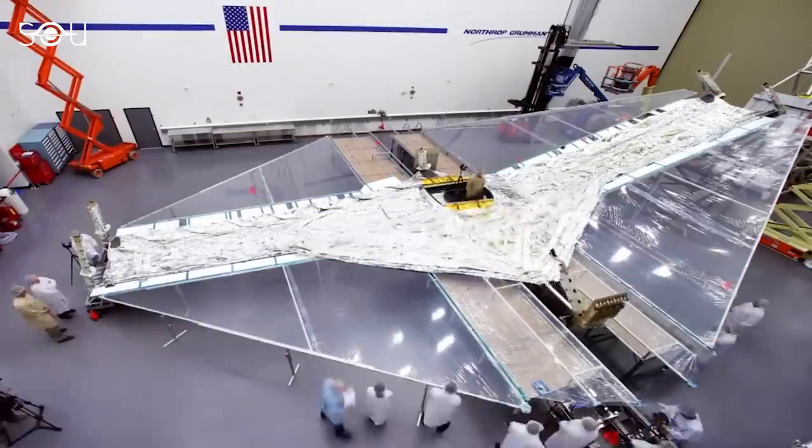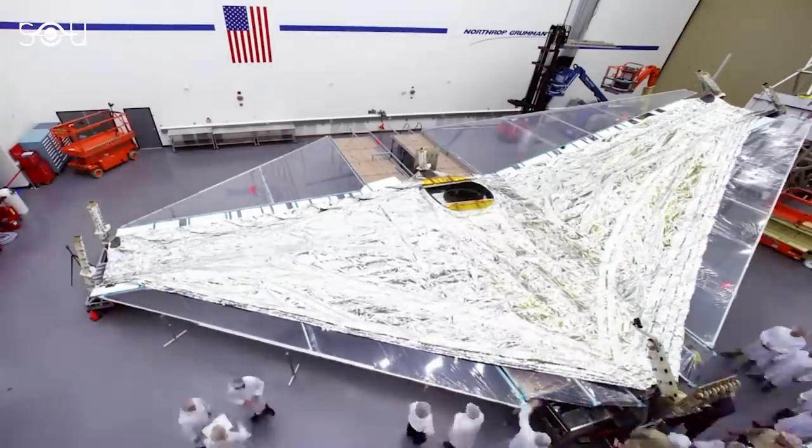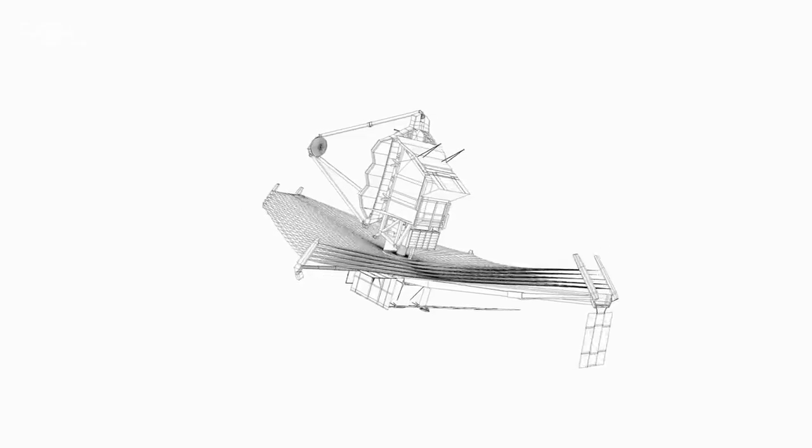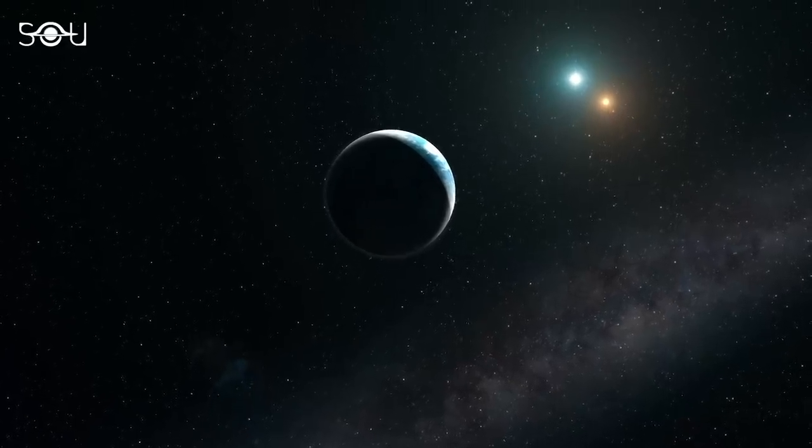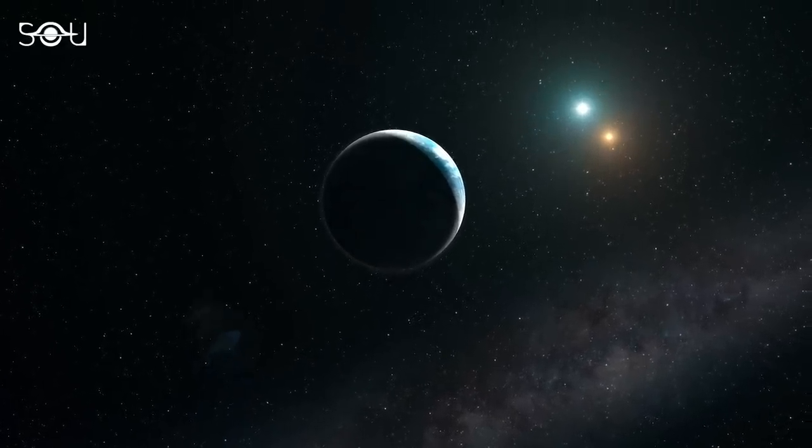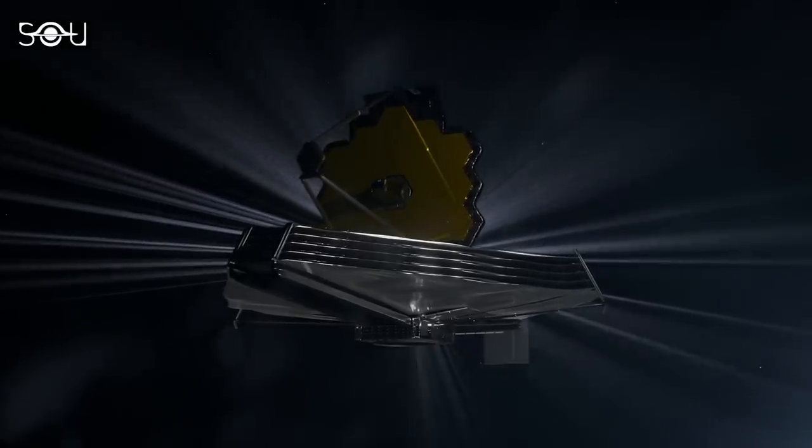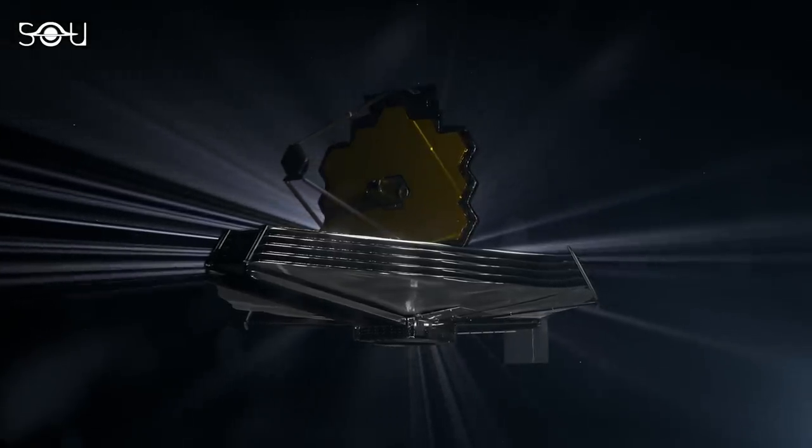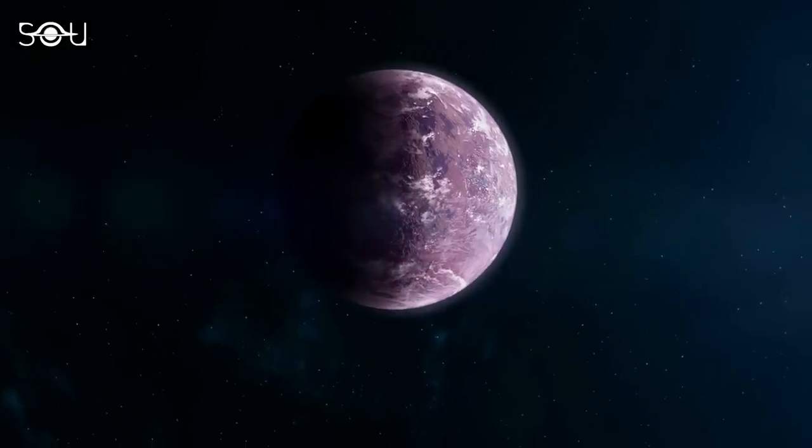When the design of the James Webb Space Telescope was in its cradle, the first exoplanet wasn't even discovered. So scientists and engineers had to improvise Webb over the years to make the exploration of exoplanets one of its primary scientific goals. Fast forward to 2022, when Webb started working in full swing, NASA had confirmed the existence of more than 5,000 exoplanets.